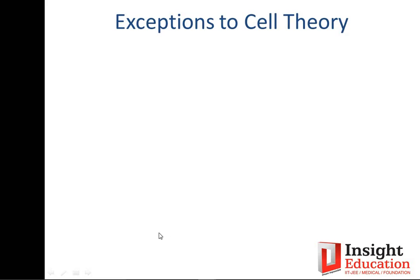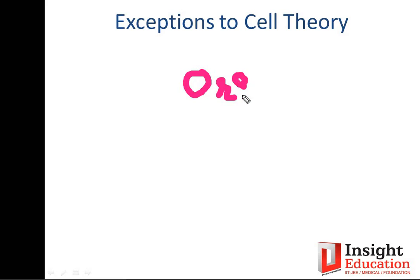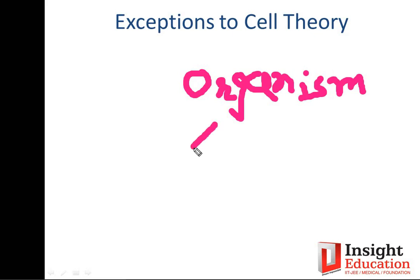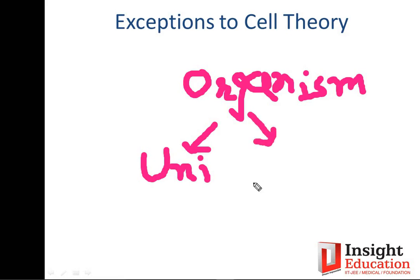Cell is explained as the basic structural and functional unit of life, which is true for multicellular organisms. On the basis of the number of cells, you can divide an organism into two types: if there is only one cell, it is a unicellular organism; if there is more than one cell, it is a multicellular organism.